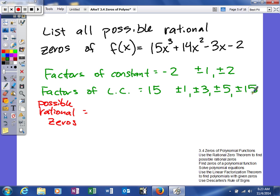So now what we're going to do is we're going to see if we can't find the possible rational zeros. So to do this, what you're going to do is you're going to do the factors of the constant, plus or minus 1, plus or minus 2, over the factors of the leading coefficient. So plus or minus 1, plus or minus 3, plus or minus 5, and plus or minus 15.